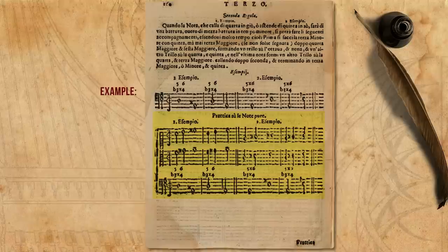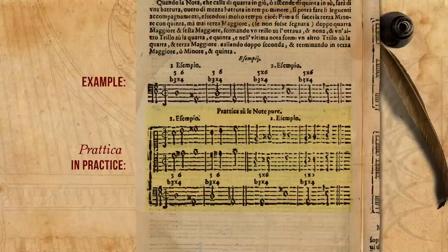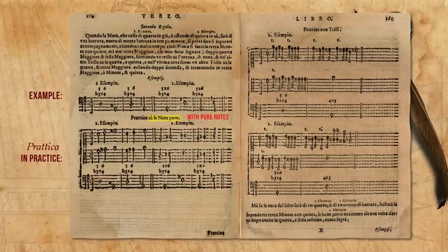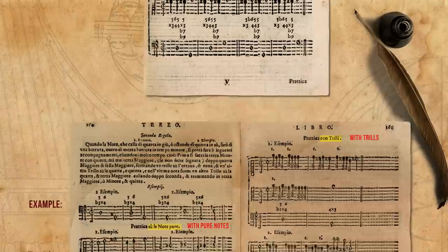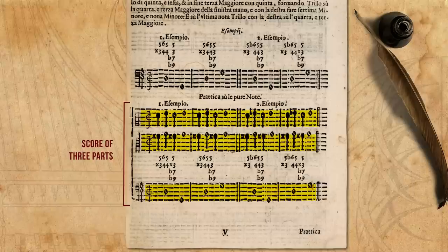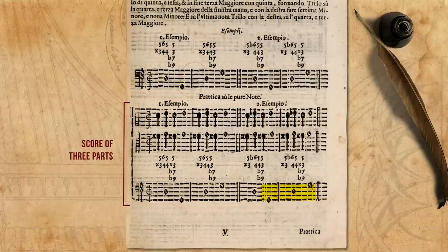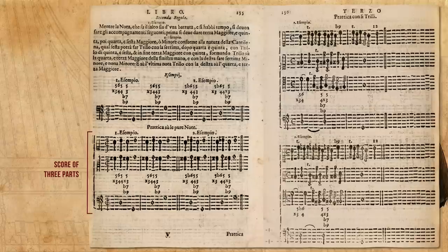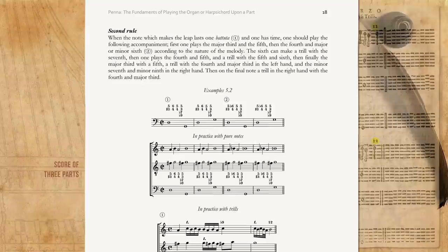Penna, however, is not satisfied with merely revealing which figures should be used when. For every example, he adds a realisation entitled 'Prattica', showing how it is done in practice. What's more, sometimes he even expands on it, showing one realisation with pure notes, and then another one ornamented with extravagant trills. As you can see, the in-practice realisations are notated in an interesting manner, mostly in a score of three parts. This is not to imply that realisations should be made using only three parts — this is very clear from the text. Penna calls for the addition of further consonances when playing. Moreover, sometimes, in addition to the written parts, further figures are added, implying more specifically which notes should be added.